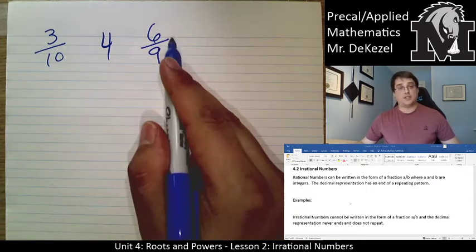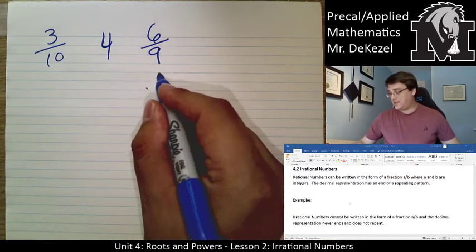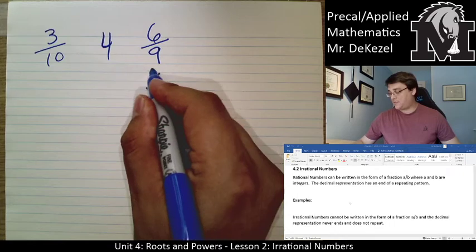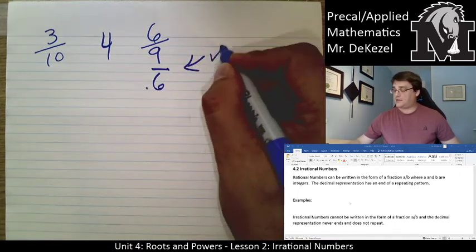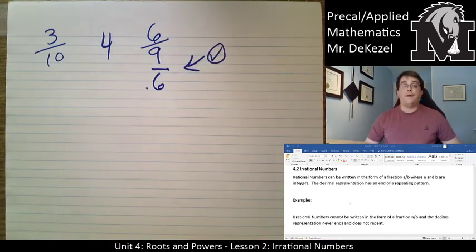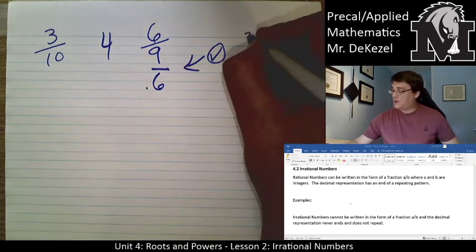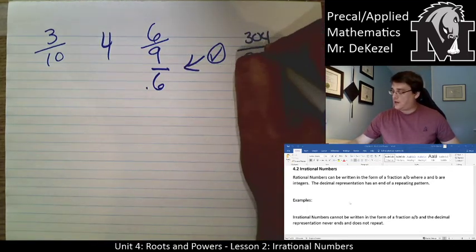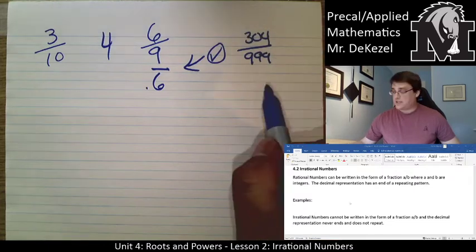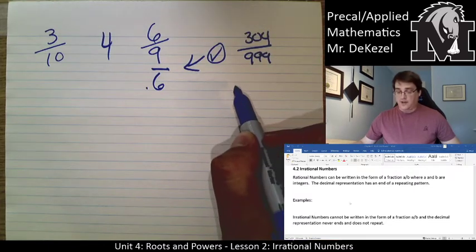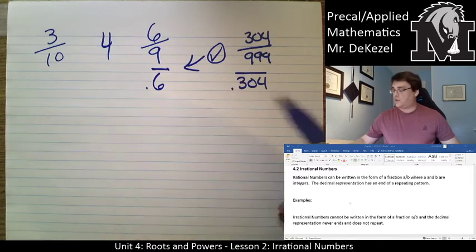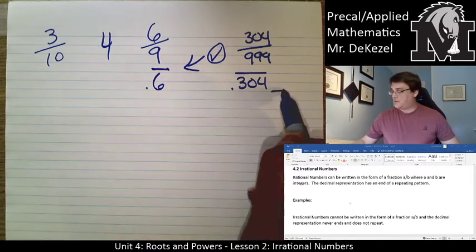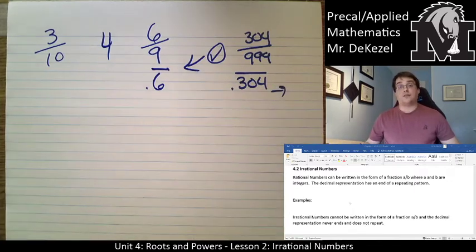6 over 9 is a rational number — if you punch that into your calculator you'll see it's 0.6 repeating. Anytime you have a repeating decimal, that is okay. Something like 304 over 999 gives you 0.304 repeating over and over again — that is a rational number.